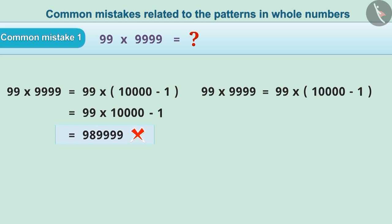It is solved by multiplying 99 with both the numbers in the brackets. By doing so, we get 990,000 minus 99, which equals 989,901.